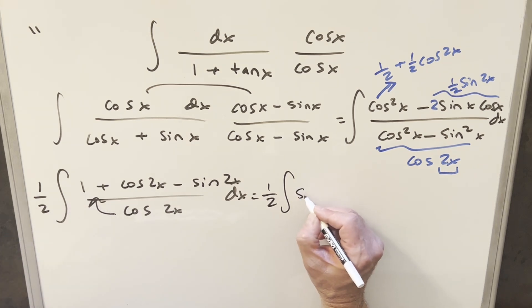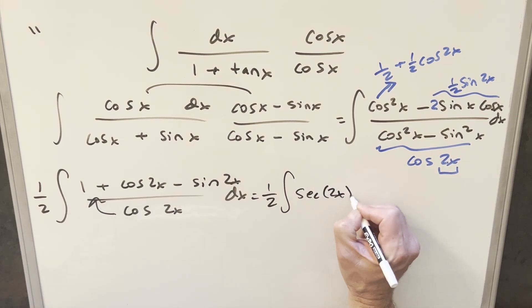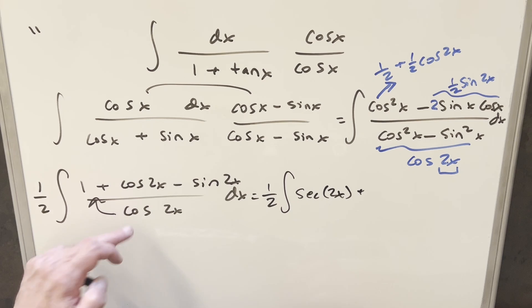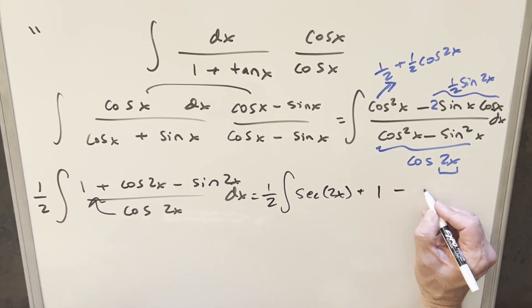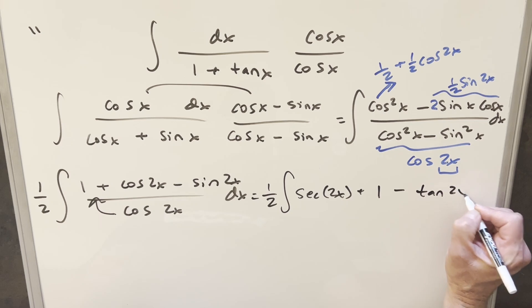So the first one, dividing it into one, we're going to end up with secant 2x. Then cosine over cosine 2x, that's just a one. And then here, this last one, this is going to be minus tan 2x.